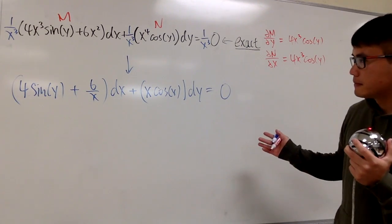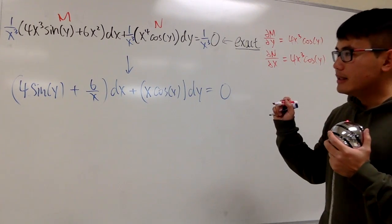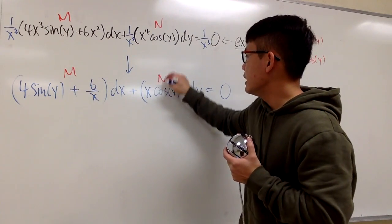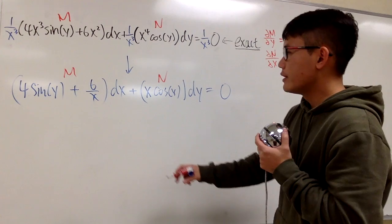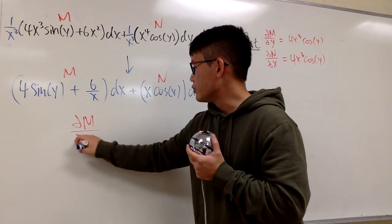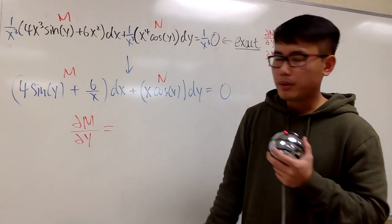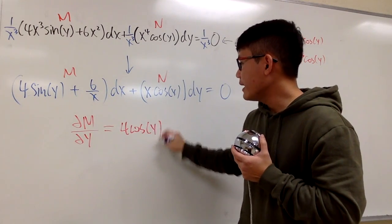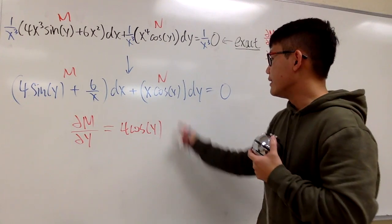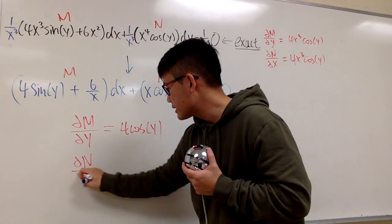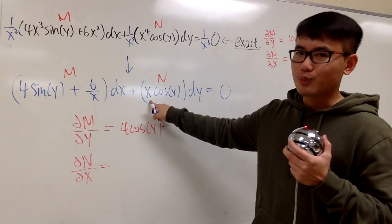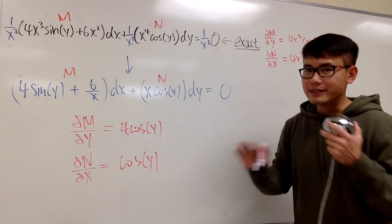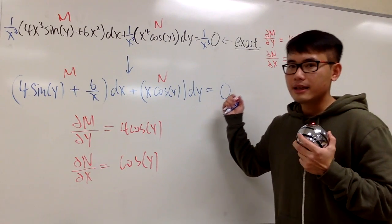So now we have a different differential equation, and this is unfortunately not an exact equation anymore. Let's do a quick check. This is M and this is N. We take the partial of M with respect to y: the derivative of 4 sine y is just 4 cosine y, and the rest is zero. Now taking the partial of N with respect to x: the derivative of x is just 1, so we have cosine y. These two are not the same, so this is not an exact equation.